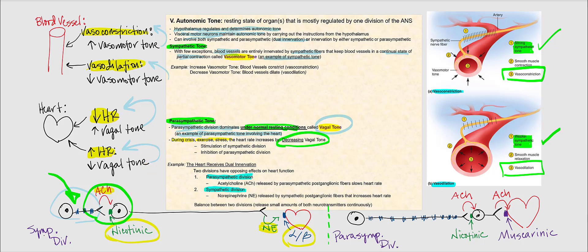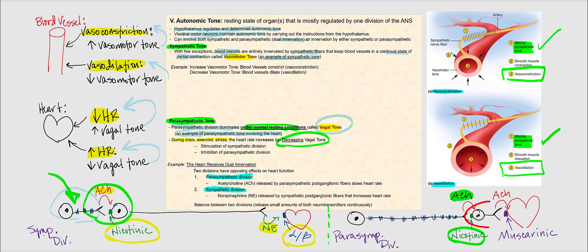Turning to the parasympathetic division: our parasympathetic pre-ganglionic neuron is classified as a cholinergic neuron. It releases acetylcholine, which binds to the nicotinic receptor present on the parasympathetic post-ganglionic neuron. The parasympathetic post-ganglionic neuron is also classified as a cholinergic neuron, therefore it releases acetylcholine. But this time, rather than nicotinic, it binds to a muscarinic receptor present on the wall of the heart.